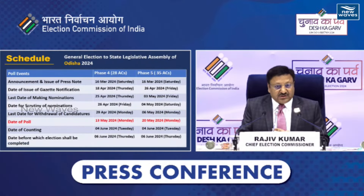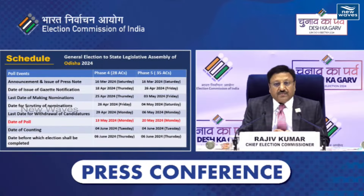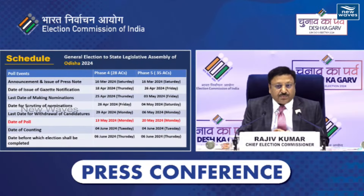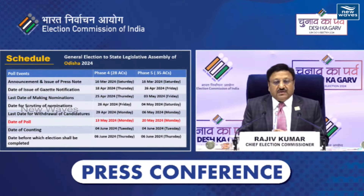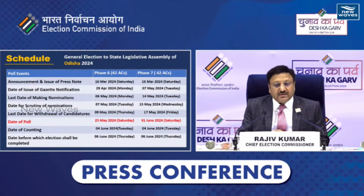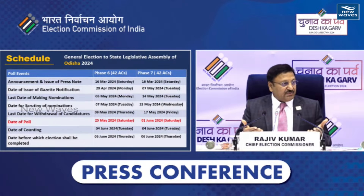Odisha mein yeh election phases mein conduct hoga. First phase: notification 18th April, date of poll 13th May. Second phase of the Odisha assembly: 26th April, date of poll 20th May. Then sixth phase and seventh phase also, Odisha would have assembly elections — sixth phase being on 29th April with 25th May elections.